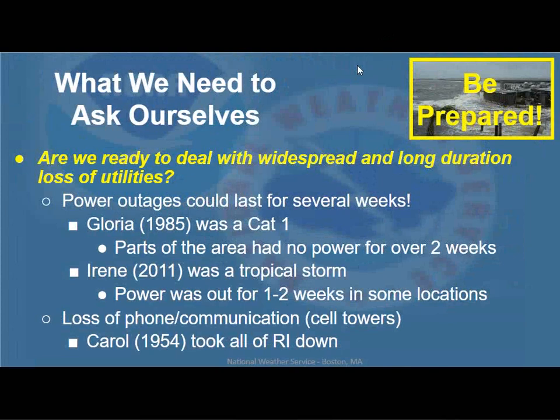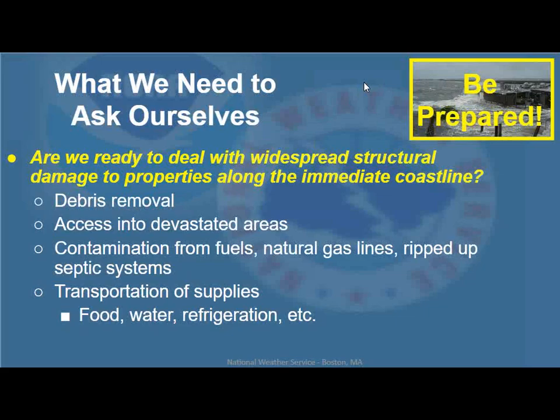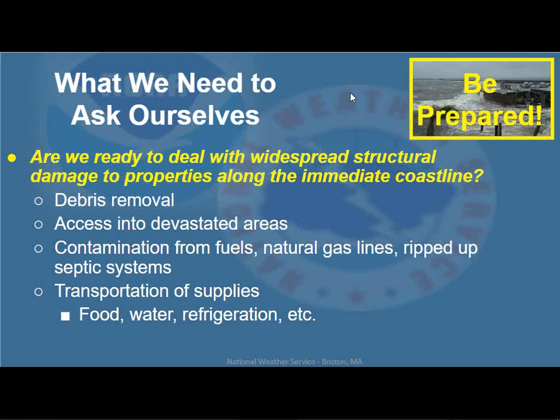Also consider loss of phone and communication — cell towers will likely be down. In 1954, Carroll took all the phone lines down. There are still phone lines and fiber optic connections, as well as cell phones. If you live along the coast, think about widespread structural damage to properties, time needed to remove debris, and getting access into devastated areas — you may not be able to get home if you've evacuated. There's contamination from fuels, natural gas lines, ripped up septic systems, and transportation of supplies — especially for the islands. If ferry services are suspended for Nantucket and Martha's Vineyard, it could be a few days until it's safe for the boats to travel again.